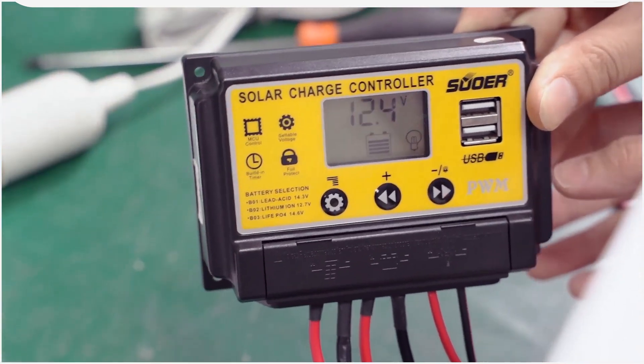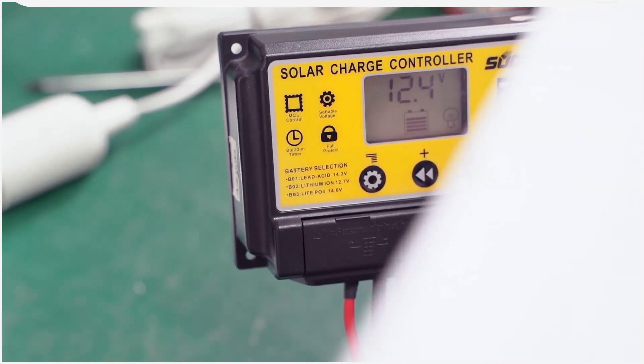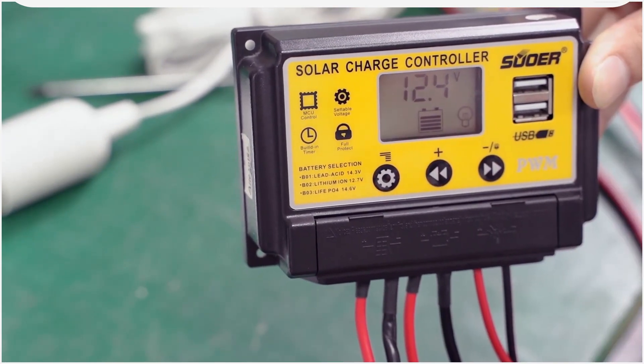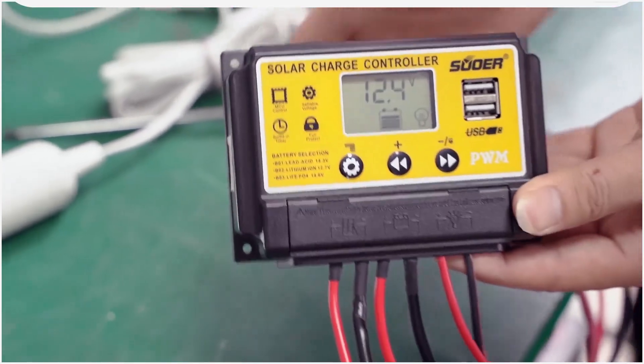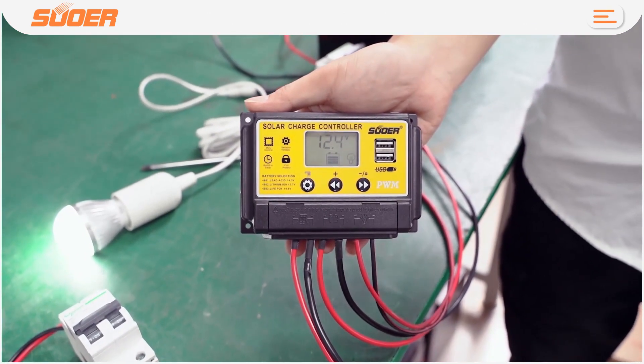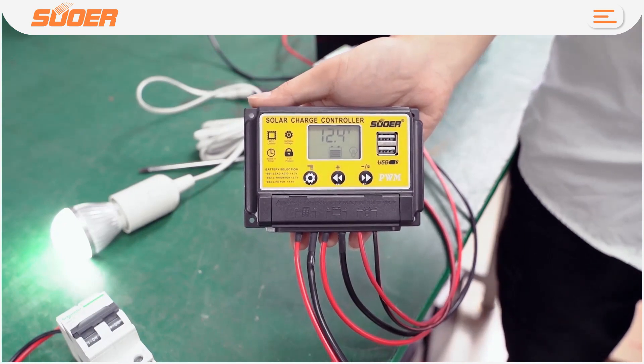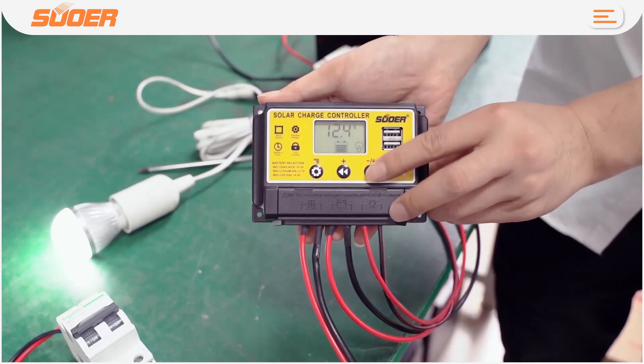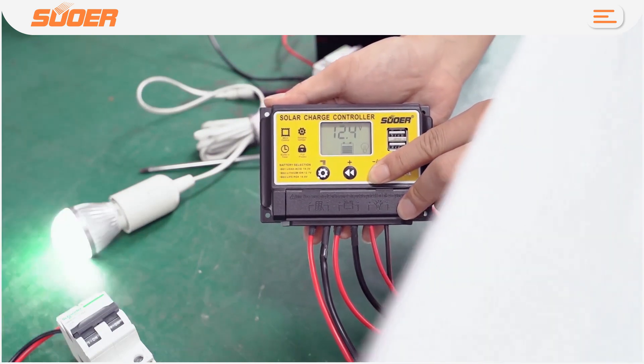We recommend using a 100 watt solar panel to match the 10 amp controller, 200 watt solar panel to match the 20 amp controller, and 300 watt solar panel to match the 30 amp controller. Make sure that the maximum input voltage is within the proper range.